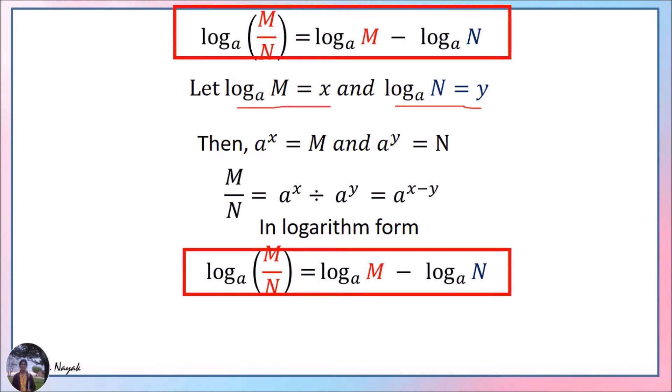For the proof of Rule 2: log base a of m equals x, log base a of n equals y, so a^x = m and a^y = n. When we divide m by n, we get a^x divided by a^y, which is a^(x−y). In logarithm form, log base a of (m/n) equals x minus y, which equals log base a of m minus log base a of n.